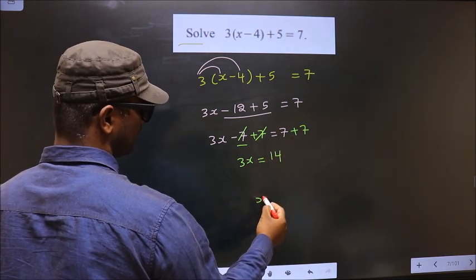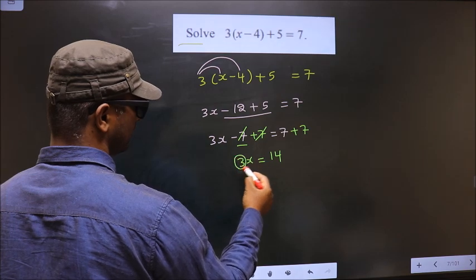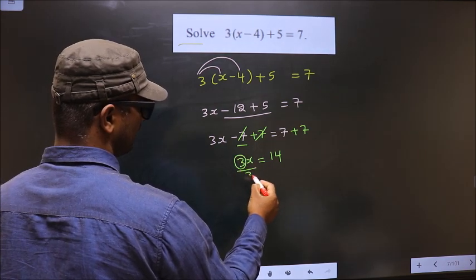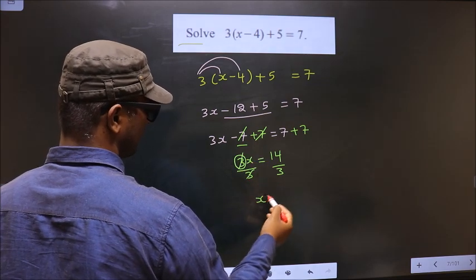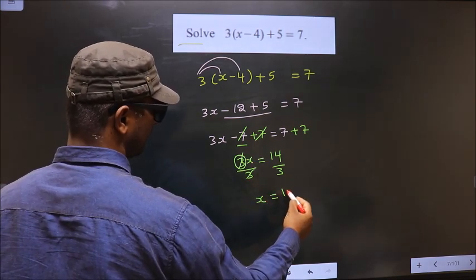Now, to get x, you should remove 3. So to remove 3, you divide by 3. It cancels out here, x, and here 14 by 3.